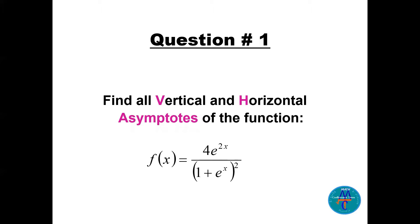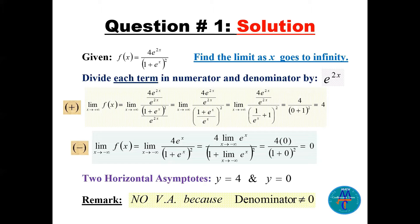Question number one: find all the vertical and horizontal asymptotes of this function. f(x) equals 4e^(2x) all divided by (1 + e^x)^2. To find the horizontal asymptotes, we find the limit of the function as x goes to plus infinity.